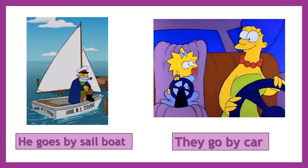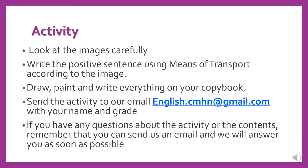Acá tú puedes ver dos personas en la imagen. Por lo tanto, vamos a utilizar el pronombre they, porque habla de ellas. Como tenemos el pronombre they, vamos a utilizar el verbo go. Después, vamos a utilizar la palabra by, porque tiene que ir en todas las oraciones. Y por último, el medio de transporte es un auto, por lo tanto vamos a utilizar la palabra car.